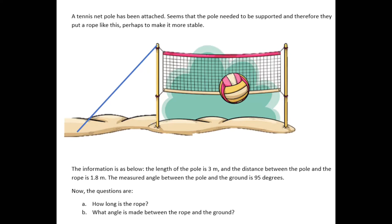Now let's look at this picture. The tennis net pole has been attached like the one you see in the picture. It seems that the pole needed to be supported, and therefore they put a rope like this, perhaps to make it more stable. The information is as below: the length of the pole is 3 meters, and the distance between the pole and the rope is 1.8 meters. The measured angle between the pole and the ground is 95 degrees. The questions are: A. How long is the rope? B. What angle is made between the rope and the ground?